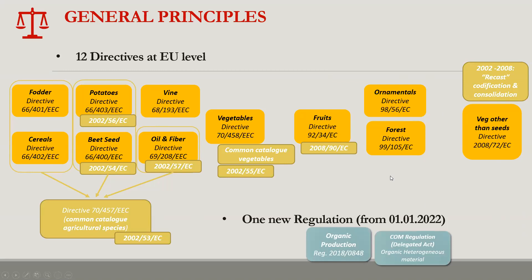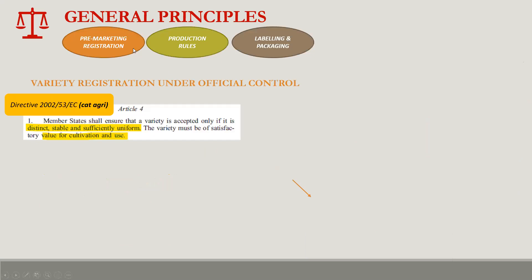The latest big change after 2010 — aside from the rejected reform — is the organic regulation, adopted in 2018 and entering into force on the 1st of January 2022. Within that framework there will also be a Commission regulation — a delegated act — on the notification of organic heterogeneous material. So this is basically the landscape in which I'll discuss the three main principles established by the EU seed marketing rules.